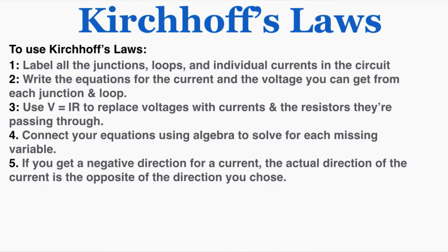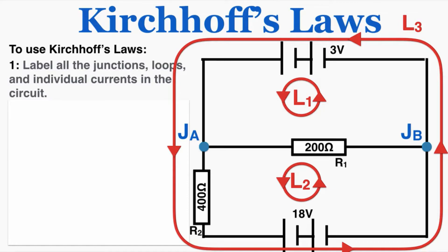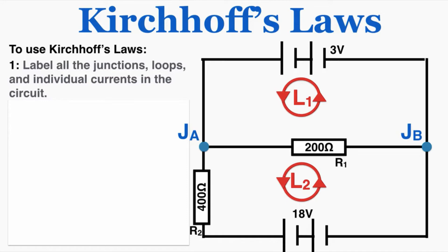This example circuit problem has multiple batteries and two resistors, and we want to find the current in every section of the circuit and the resistance in every part. To use Kirchhoff's laws, we start by labeling all the junctions, loops, and individual currents. There are two junctions — junction A and junction B — and three possible loops: loop one, loop two, and a total loop around the outside. I arbitrarily chose both loops going counterclockwise; clockwise works too and won't matter in the end.